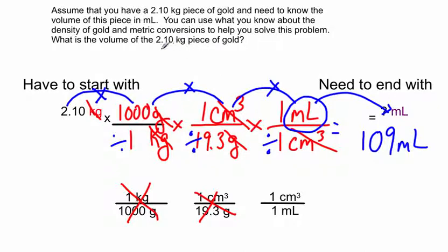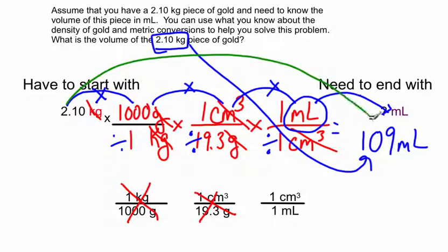So if I took a piece of gold that had a mass of 2.10 kilograms, it would have a volume of 109 milliliters. That's the amount of space that it would take up. So these two things, what you start with and what you end with, are equivalent.